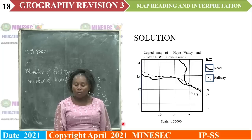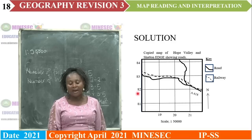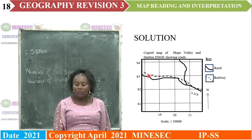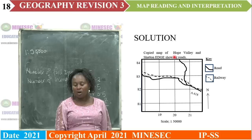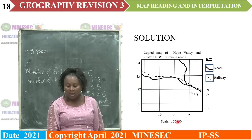When you copy your map, the grid references do not change — copy them as you have seen them in the portion you have been asked to copy. The features you are asked to insert should pass through the same grid lines or grid squares in which they pass in the original map. Then you give it a title — 'copied portion of' or 'copied map of Hope Valley and Chatton'. You add a key, then the orientation, and then you copy the scale. The scale of that map is 1:50,000 and you have not changed the scale.